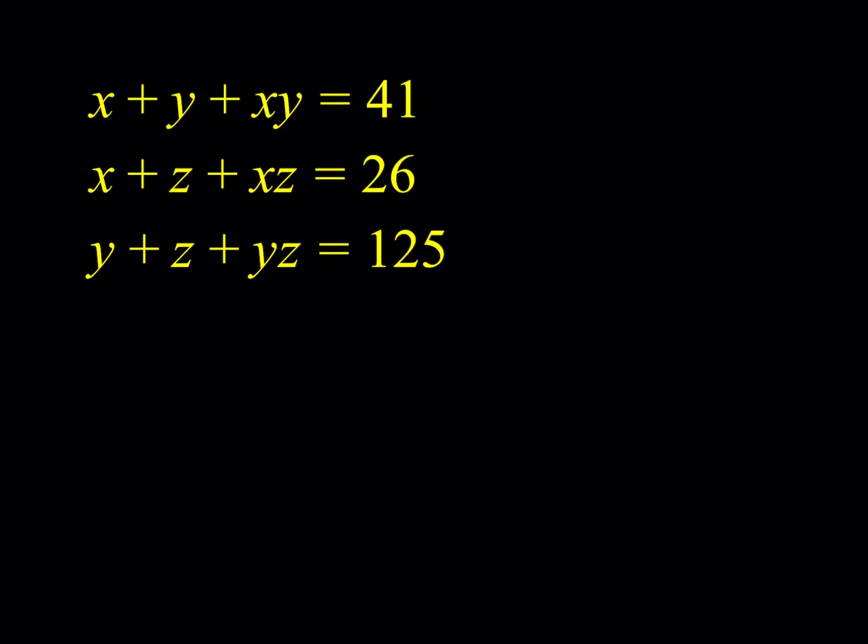When you look at these equations you might think: can we add them? Absolutely. Can we subtract them? Of course — we can multiply them, add them, do all sorts of things. Those are the standard techniques for systems. With this one there is more than one way to solve it. For example, you can take the first and second equations and subtract them, which would eliminate x. So subtracting gives you y minus z plus xy minus xz equals 41 minus 26, which is 15.